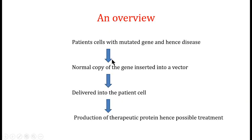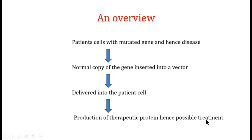To give an overview of gene therapy: there is a patient with a mutated gene who is showing symptoms of a particular disease. You insert a normal copy of the gene into a vector, and this vector is used to deliver the normal copy into the patient's cell. When you deliver the normal copy of the gene, the function of that gene is restored, producing a therapeutic protein and hence the possible treatment. So in essence, you are replacing a mutated gene with a normal copy, producing a therapeutic protein.